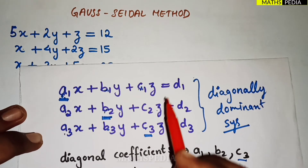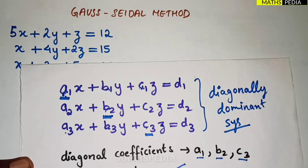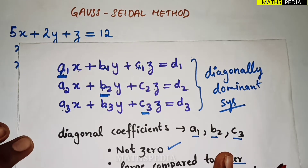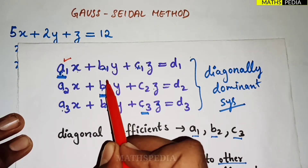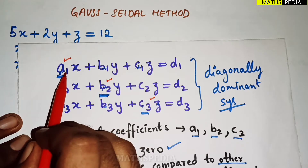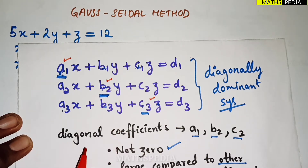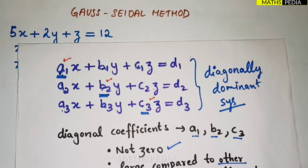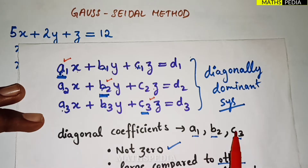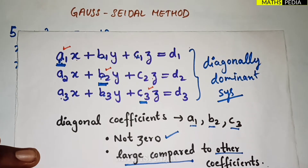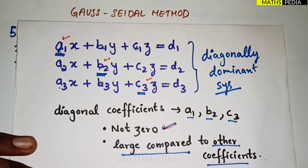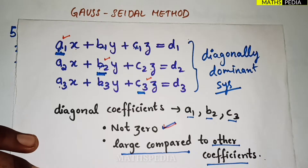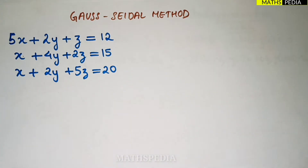This is the standard form we consider for a system of equations where three variables x, y, and z are involved, and d1, d2, d3 are the constants. Now, observe the diagonal coefficients carefully. The diagonal coefficients are a1, b2, c3 — the coefficient of x in the first equation, coefficient of y in the second, and coefficient of z in the third. These should not be zero; they should be large numbers compared to the other coefficients.